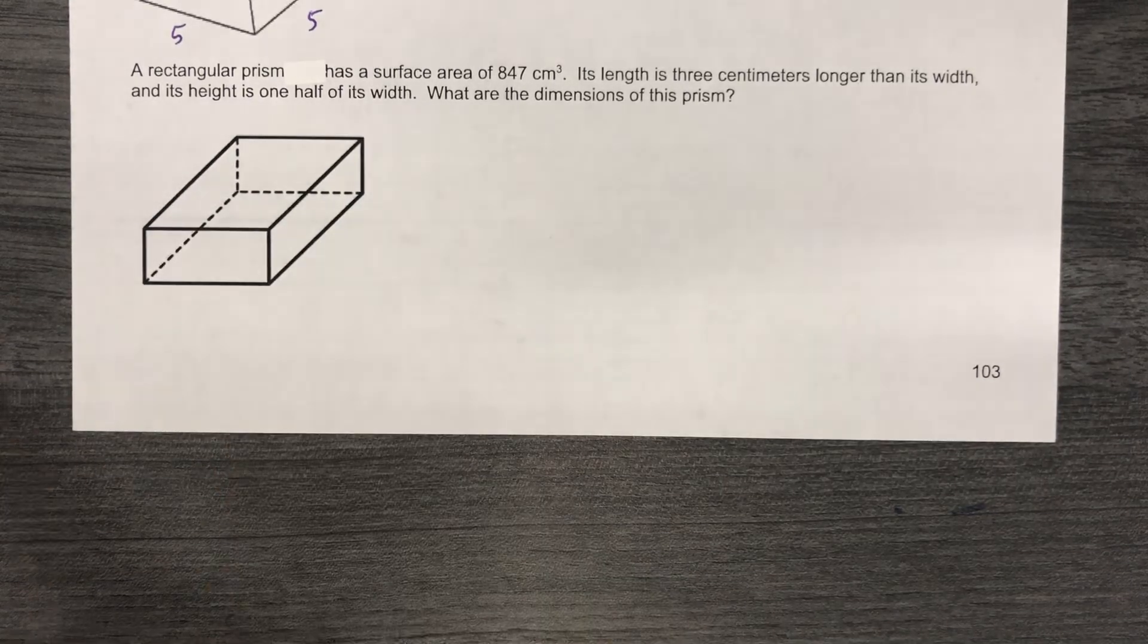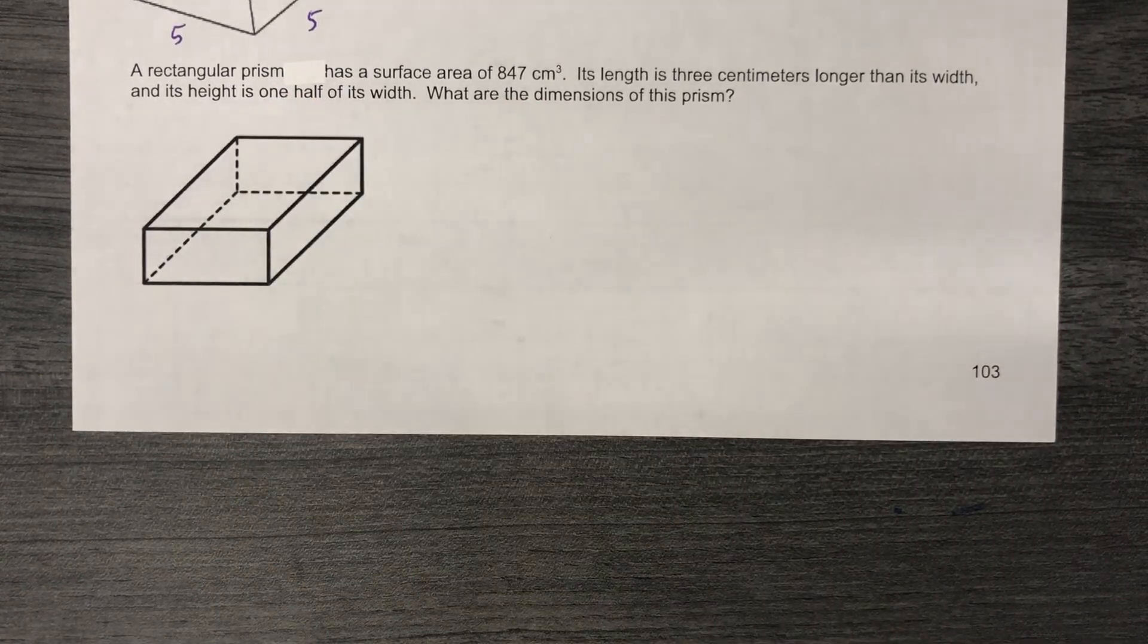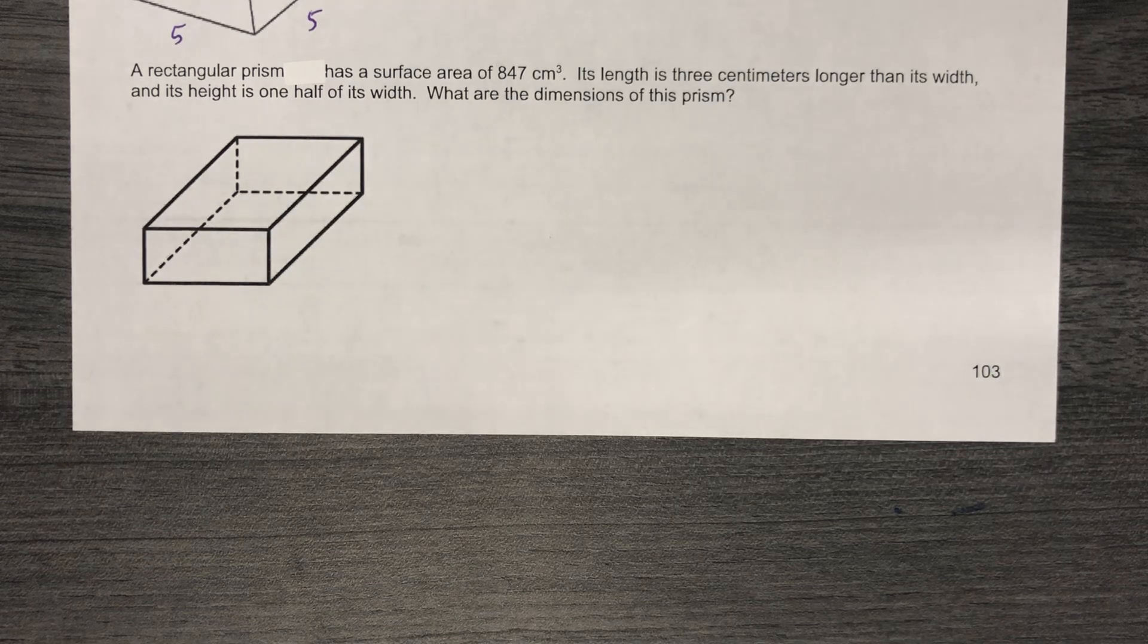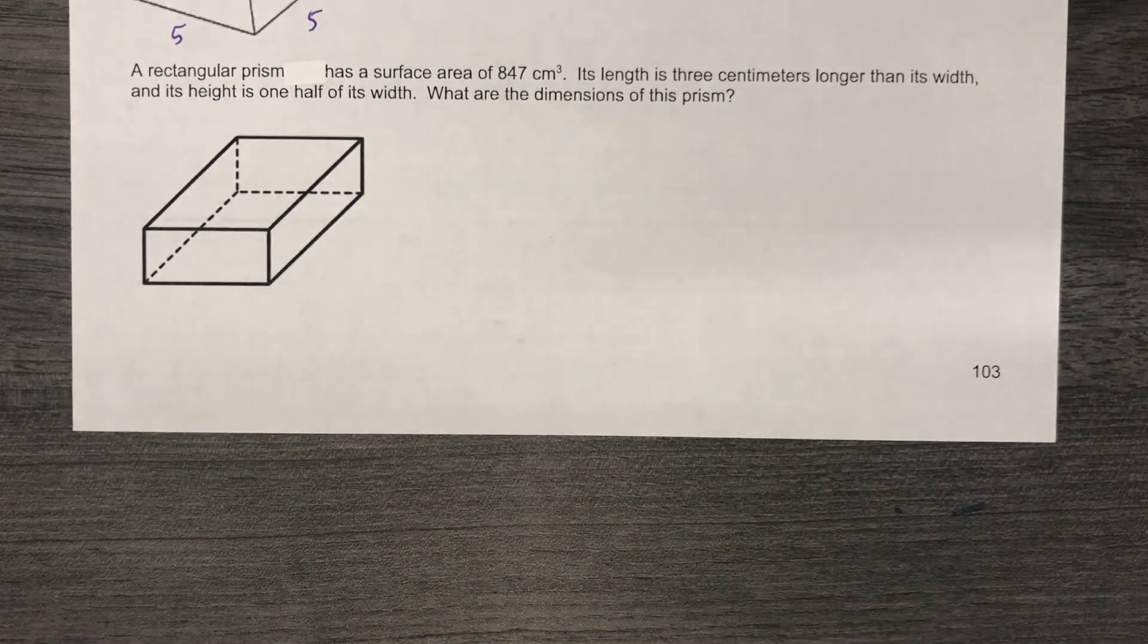A rectangular prism has a surface area of 847 cubic centimeters. Mine had a typo. Yours does not. Its length is three centimeters longer than its width. Its height is one half of its width. What are the dimensions of this prism?